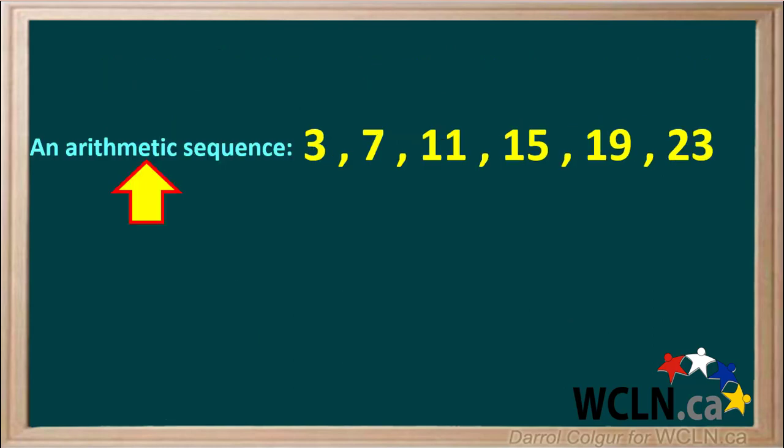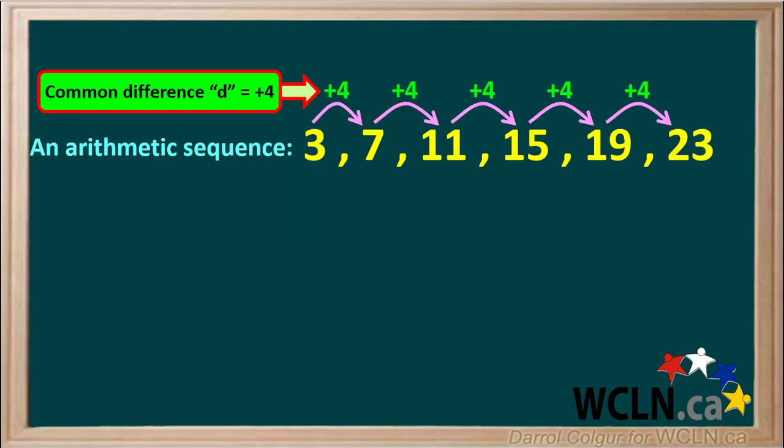Here is an arithmetic sequence. The first term A1 is equal to 3, and the common difference D in this sequence is equal to positive 4. We add 4 to each term to get the value for the next term. 3 plus 4 equals 7, 7 plus 4 equals 11, 11 plus 4 equals 15, and so on.